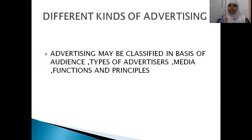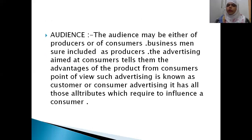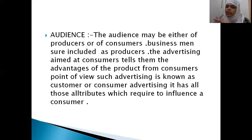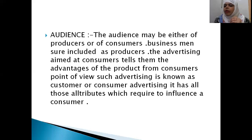The audience may be either the producers or the consumers. Businessmen serve as producers — advertising aims at customers and tells them the advantages of the product. Such advertisement from the consumer's point of view is known as consumer advertising. There are two kinds of audience: one is the producer or manufacturer of the product, and the second is the consumer or customer. From the producer's viewpoint the advertisement targets the mass, whereas from the customer viewpoint it is customer or consumer advertising.